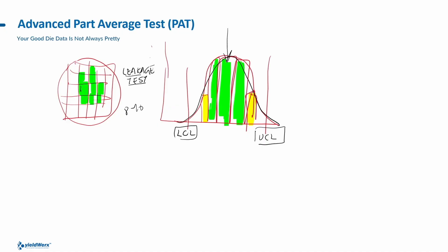To us, it doesn't really matter what the actual test is. It's basically, based on the test specs, based on the measurements being made for that die, it still is a good die, but were those measurements within the normal distribution of other known good die? And if they weren't, did they belong to a different signature? And that's where advanced part-average test looks at the actual data.